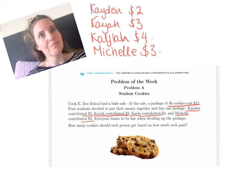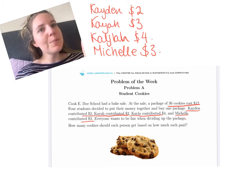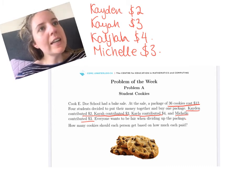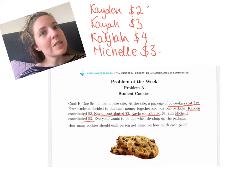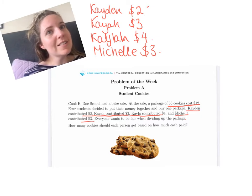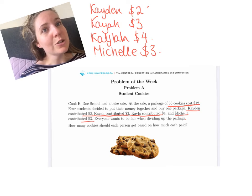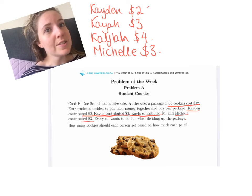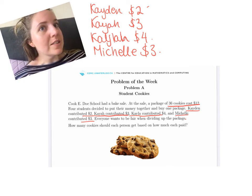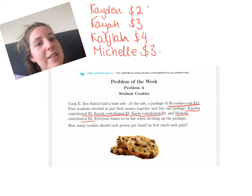So obviously, looking at the information I've written down, Caden is going to get the least amount of cookies because he only contributed $2. Kayla is going to get the most because she contributed the most money — she contributed $4. There are a couple of ways you could do this.